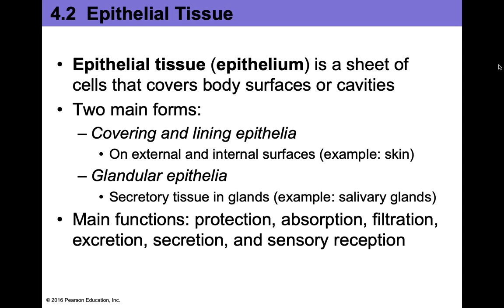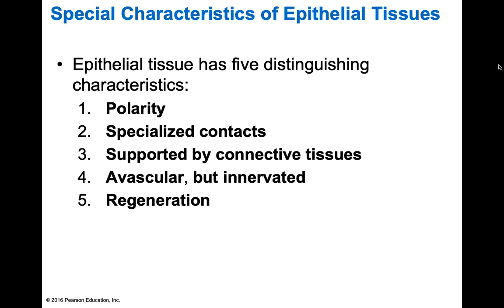Epithelial tissues have special characteristics that distinguish them from other tissue types. They have polarity, specialized contacts, and are supported by connective tissue. They are avascular but innervated — meaning they do not contain blood vessels but they do contain nerves. And they have regeneration: your skin cells slough off all the time, which is partly what creates dust in your house. Our epithelial cells are constantly regenerating — because if we're losing them and we don't have holes in our body, they must be coming back.